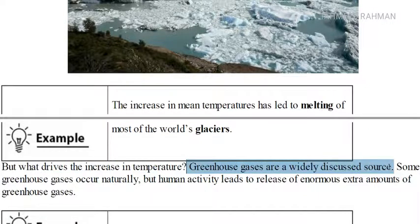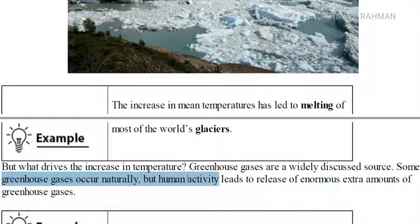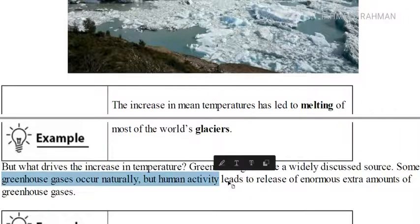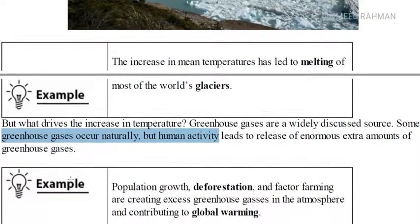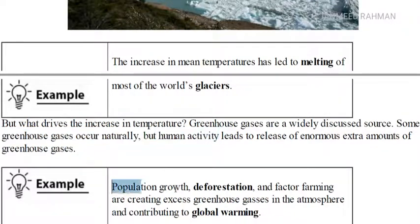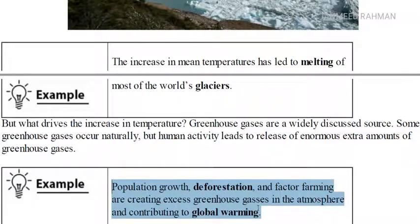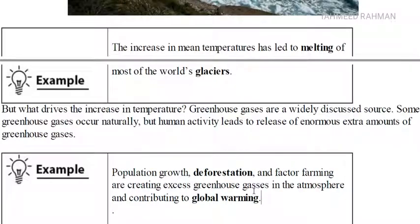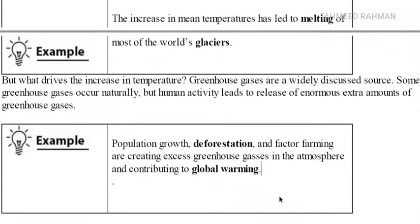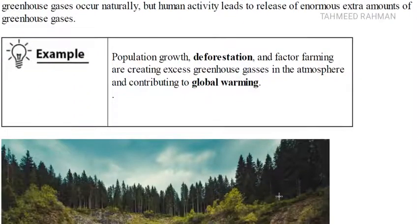Greenhouse gases are a widely discussed source. Some greenhouse gases occur naturally, but human activity leads to the release of enormous amounts of greenhouse gases. Population growth, deforestation and factory farming are creating excess greenhouse gases in the atmosphere and contributing to global warming.